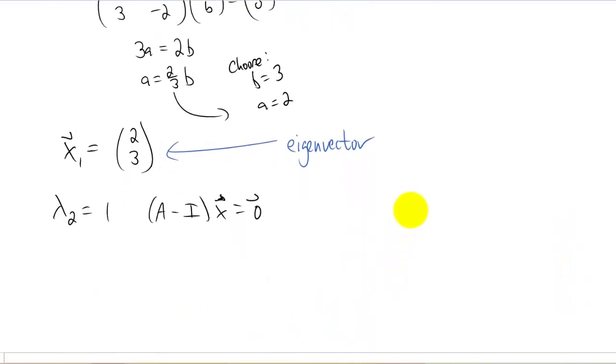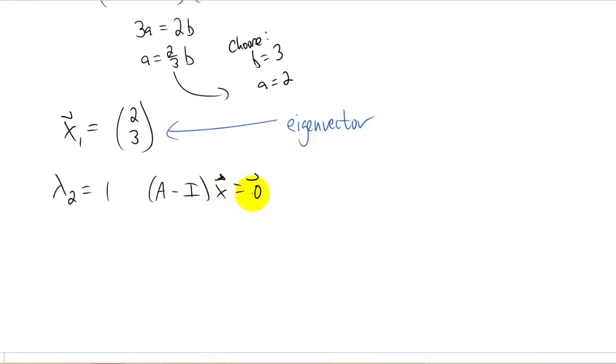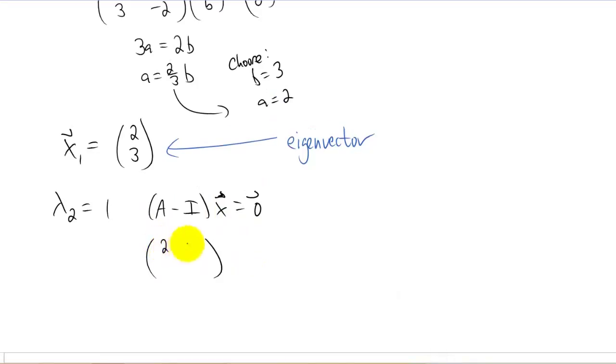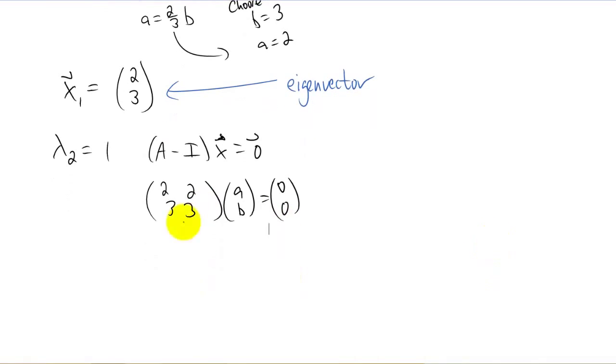Let's find our second eigenvector that's associated with our other eigenvalue. Again, A minus lambda I times our eigenvector is going to be the zero vector. And if we plug that in, we end up getting two, two, three, three times our eigenvector, which we've just been calling a and b in this class. You'll notice again, good check here, your two equations are exactly the same. They both tell you that a is going to be negative b.